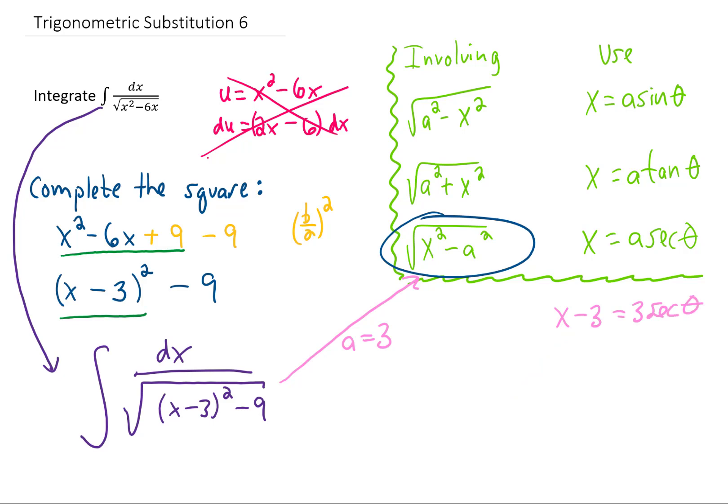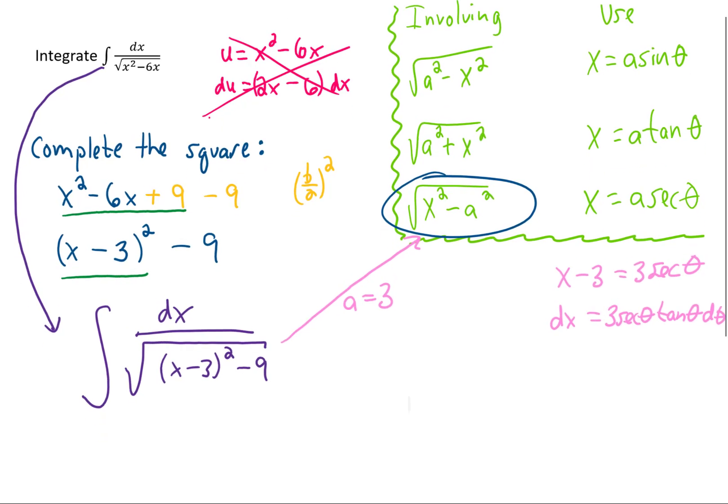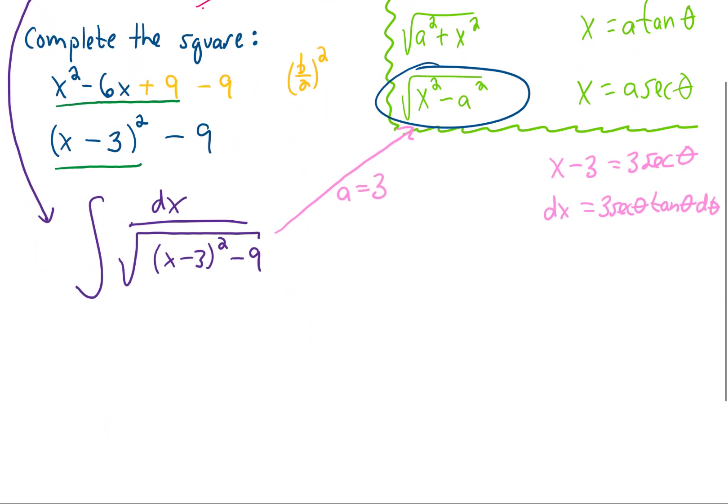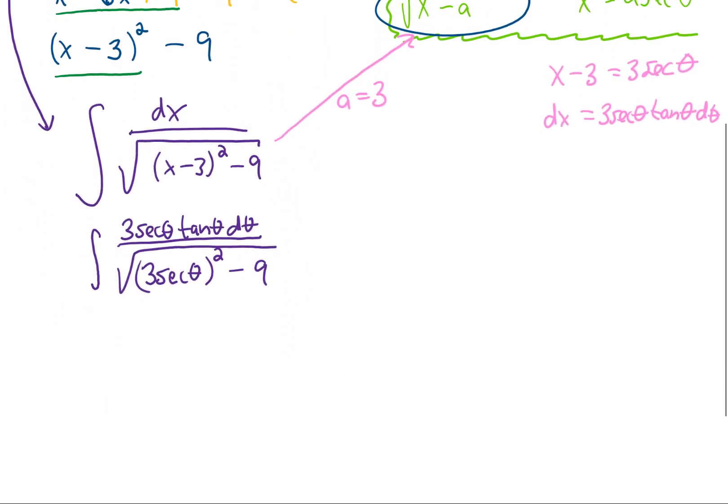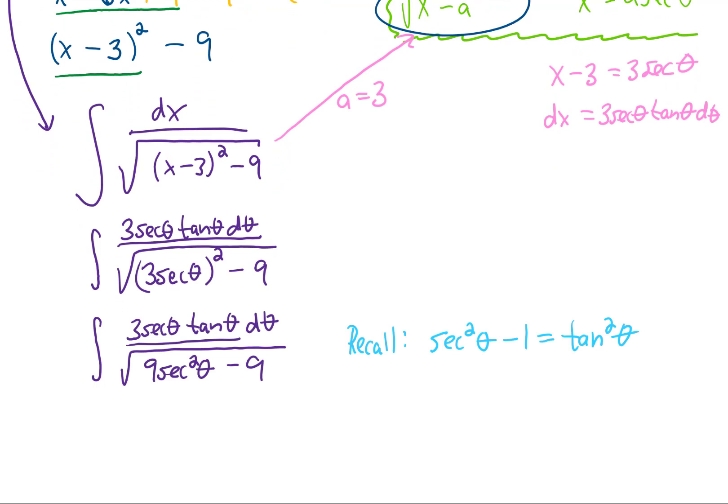Taking a derivative of both sides of this is going to give us dx. You'll notice the constant 3 right here goes to 0, and the derivative of 3 secant theta is 3 secant tangent. Now let's plug those substitutions in and get to work on this integral. As always, we can simplify what's under the square root. And as always, we can recall the appropriate trigonometric identity.